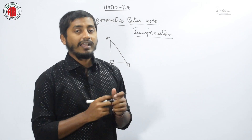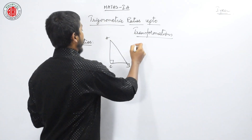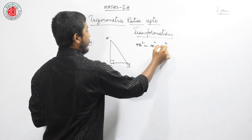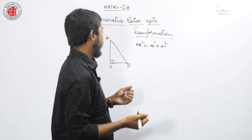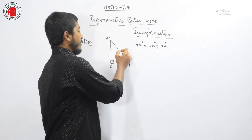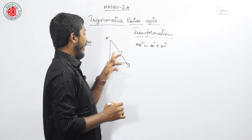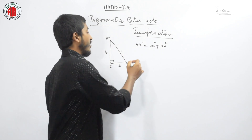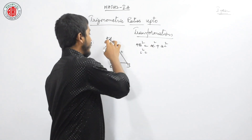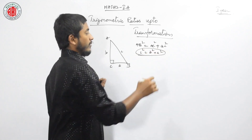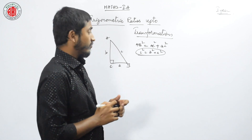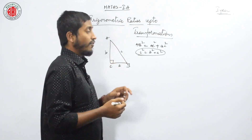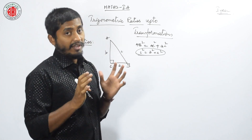What is the Pythagoras theorem statement? In a right-angle triangle, the square of the hypotenuse is equal to the sum of squares of the other two sides. For example, if the side opposite to angle C is c (AB is c), and the side opposite to angle A is a, and the side opposite to angle B is b, then this relation can be written as c² = b² + a². This is the relation of sides in a right-angle triangle where hypotenuse squared equals the sum of squares of the other two sides.